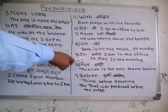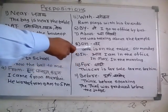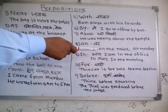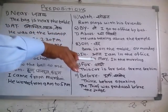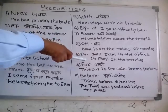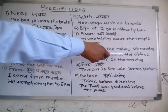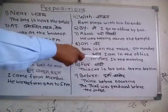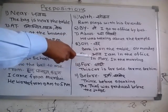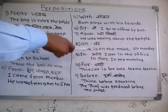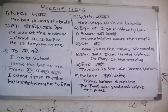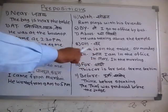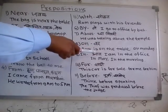Next is 'in'. 'In' is used to show where the subject is — to show a particular place, like in the room, in the office. For example: I am in the office. We also use 'in' with all names of months: in May, in June, in January, in February, in December, in July. We use 'in' before months, and also before parts of the day: in the morning, in the evening, in the afternoon.